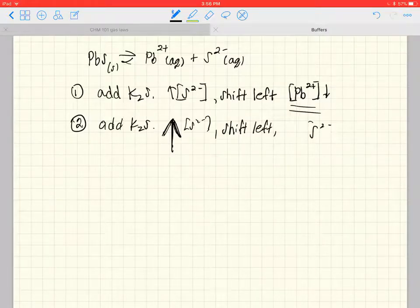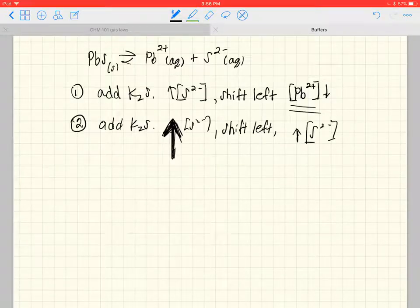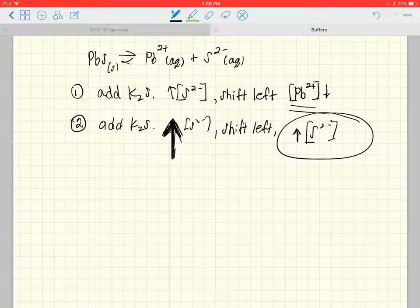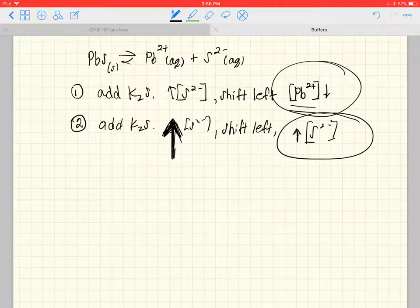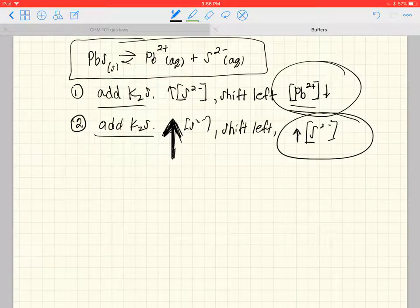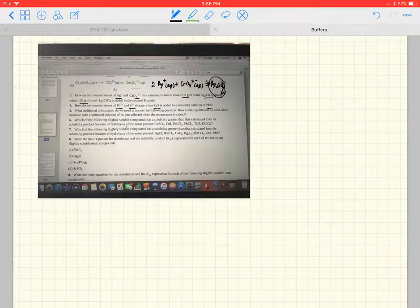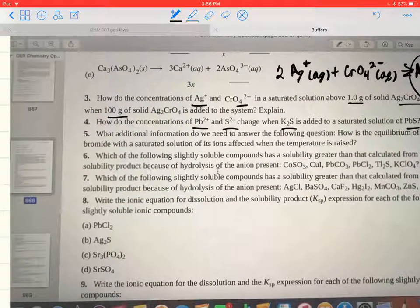This of course does shift left - the reaction shifts left so sulfide gets used up a bit, so it would drop a little bit as evidenced by these cartoonish drawings. You add a ton of sulfide and maybe pounds of sulfide are left after it shifts left. So the net result is that the sulfide concentration is going to increase. The lead ion is going to decrease if you add potassium sulfide to this equilibrium.